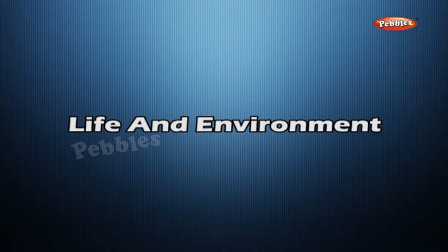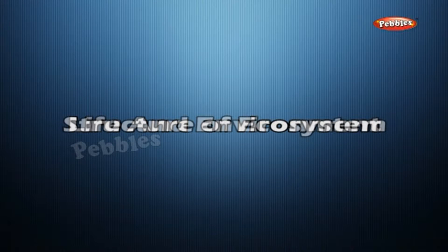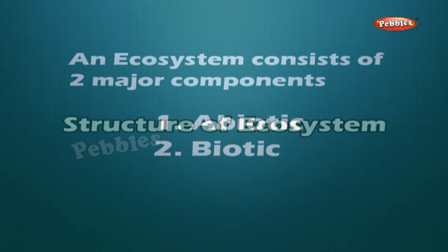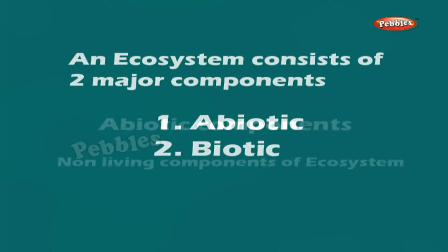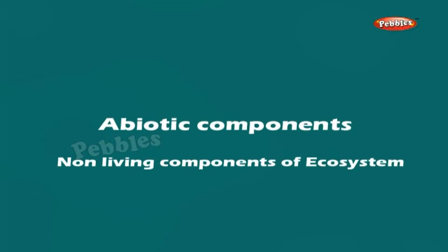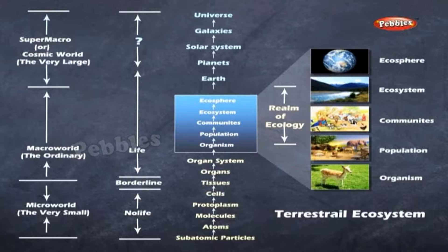Life and Environment: Structure of Ecosystem. An ecosystem consists of two major components: abiotic and biotic. Abiotic components are the non-living component of an ecosystem and include inorganic and organic substances and climatic conditions.